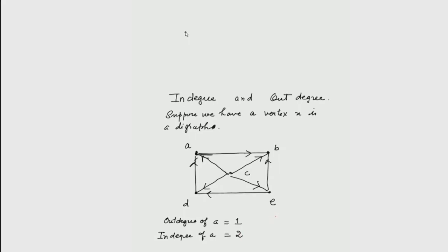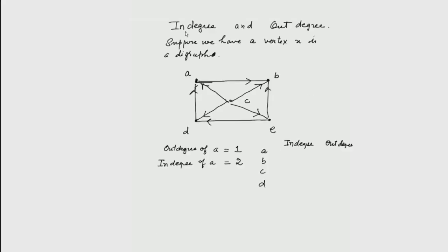Similarly we can make a list of in-degrees and out-degrees for all vertices A, B, C, D, E. For A: in-degree 2, out-degree 1. For B: in-degree 3, out-degree 0. For C: in-degree 0, out-degree 4. For D: in-degree 2, out-degree 1. For E: in-degree 1, out-degree 2.